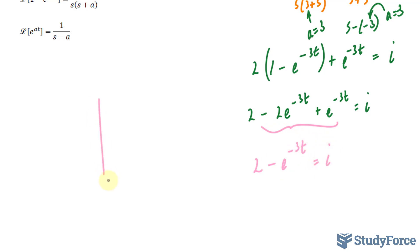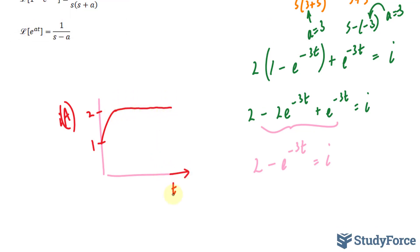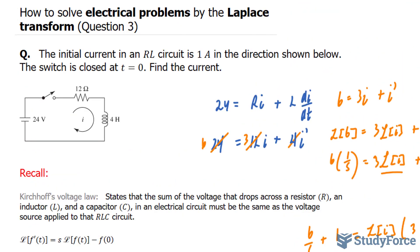And if we were to graph this, we would end up with something that looks like this. Where it starts over here, that's 1, 2, and this represents the current in amperes. And it would maximize at 2 amperes as time increases infinitely. And so there you have it. That is how to solve electrical problems by the Laplace transform. Make sure to watch question 4 for another example.